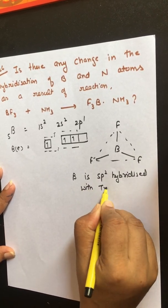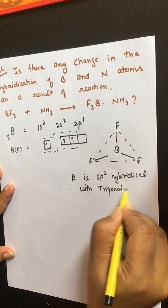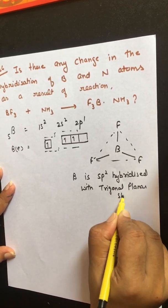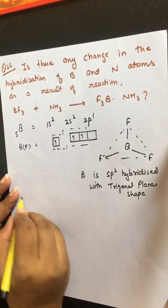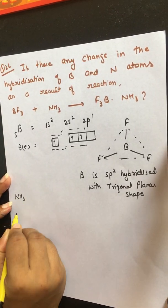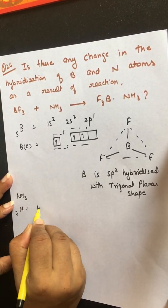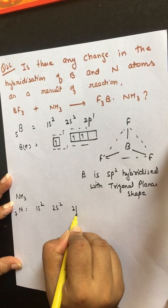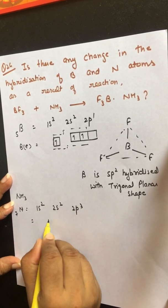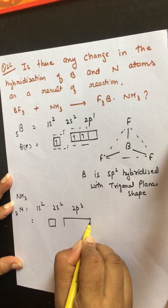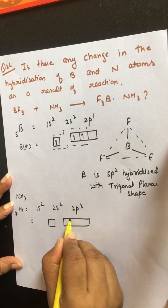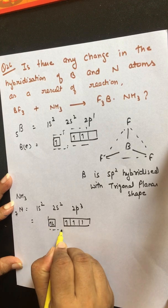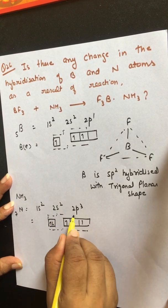In the case of ammonia, nitrogen has atomic number 7 and its electronic configuration is 1s² 2s² 2p³. Nitrogen is sp³ hybridized with one lone pair of electrons and three bond pairs.